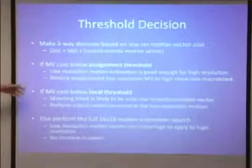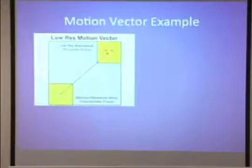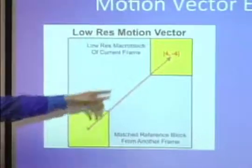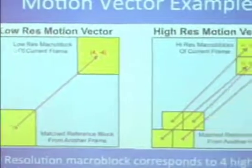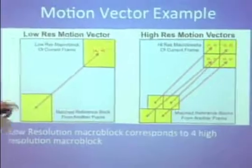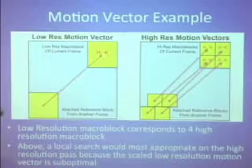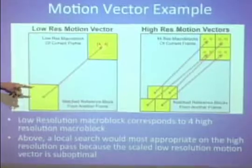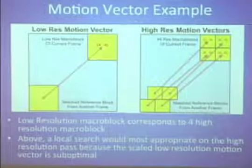Here's a graphical example of the motion vectors. You can see your current block and the motion vector showing a 4-4 pixel shift to the reference block. In the high-resolution, that macro block corresponds to four macro blocks because of the doubled resolution. You can see the reference blocks don't exactly match up to those used in the low-resolution, so we can't directly assign — we'd have to do the local search, because they're in the neighborhood of 8, negative 8 once you scale it, but not exactly. A local search there greatly reduces the time needed to find that motion vector.